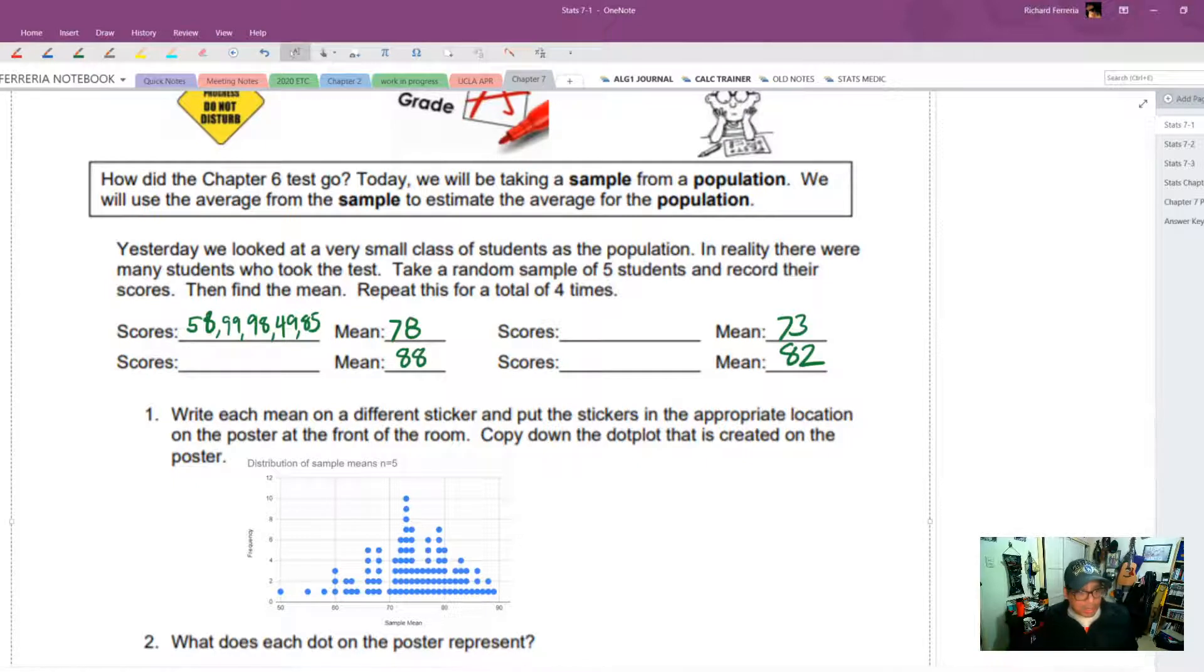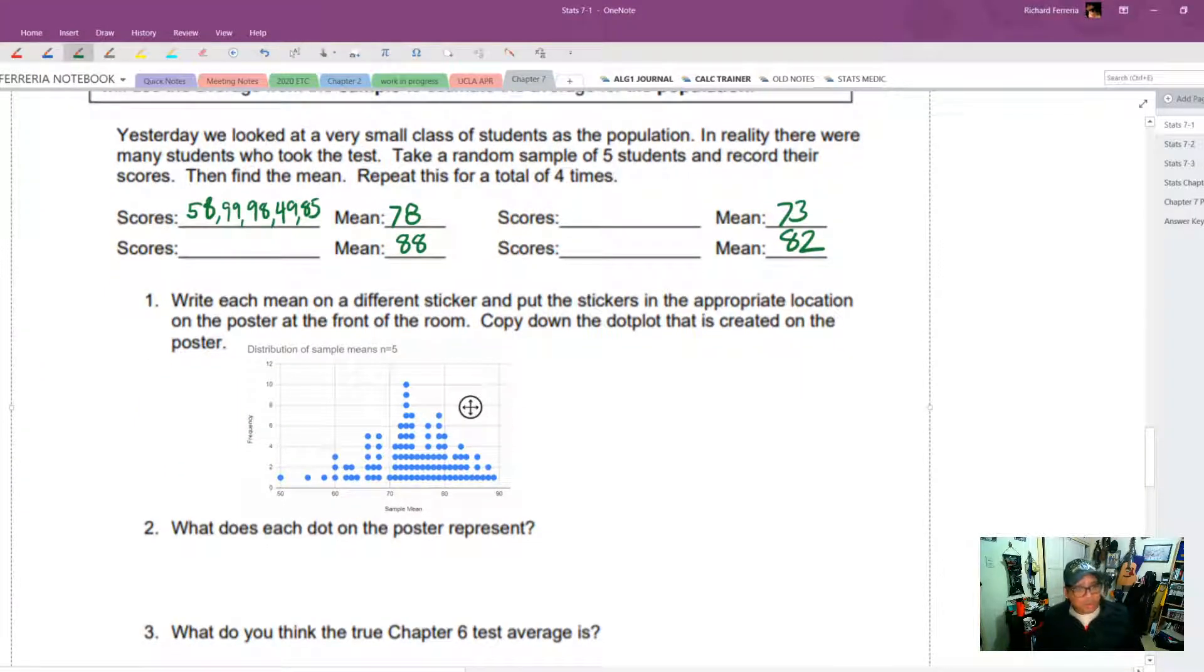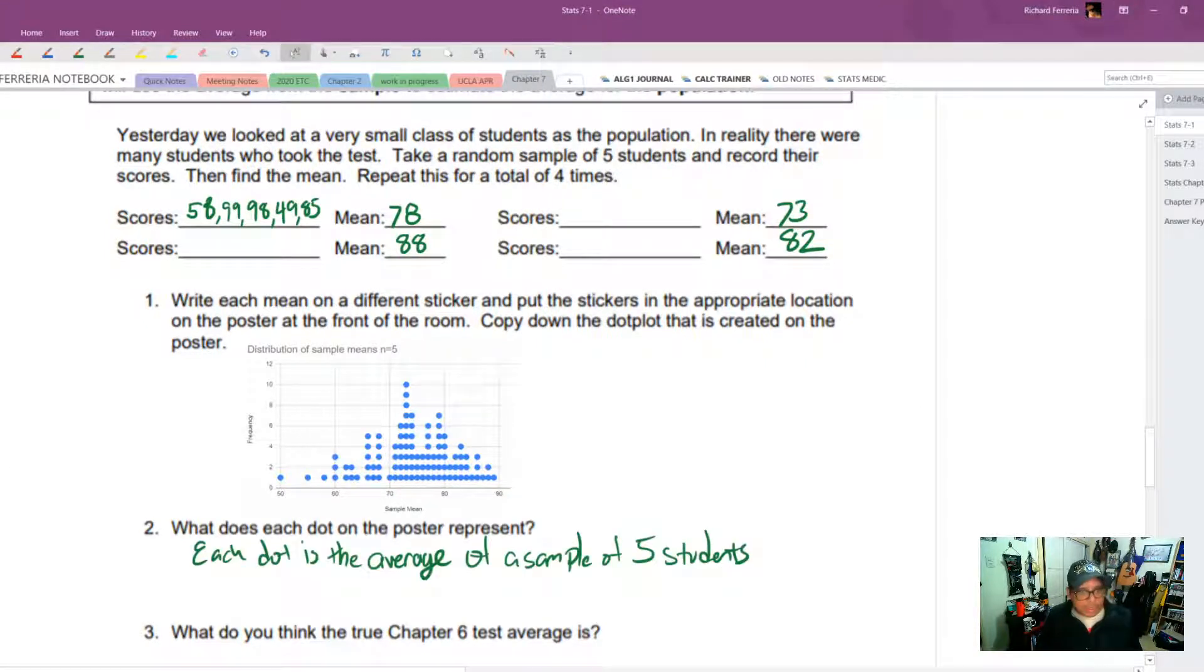All right. So that's a pretty big dot plot. This is a distribution of sample means N equals five. So again, each one of these dots represents the average from a sample of five students. Each dot represents an average from a sample of five, there are 100 dots. So that represents 100 different samples. This is not a sampling distribution because this isn't every possible sample of five test scores. It's just 100 of those samples.